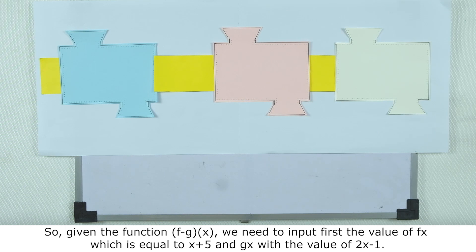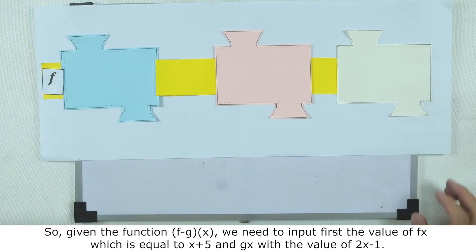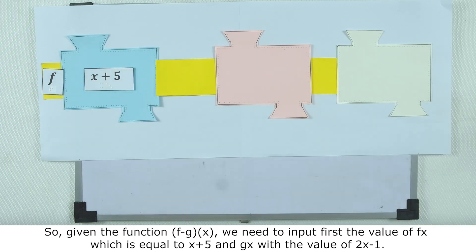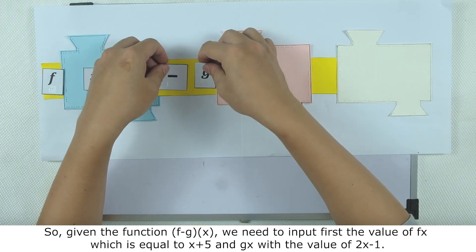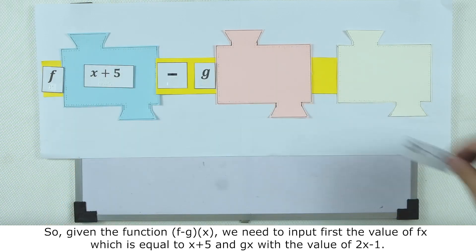So in the given function, f minus g times x, we need to input the first value of f of x, which is equal to x plus 5. And also, we have to input the g of x function with the value of 2x minus 1.